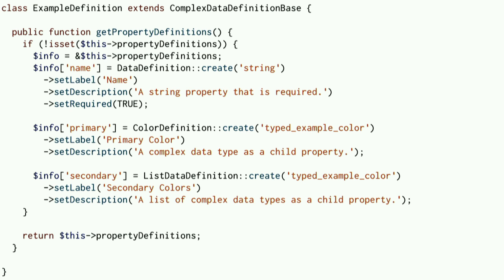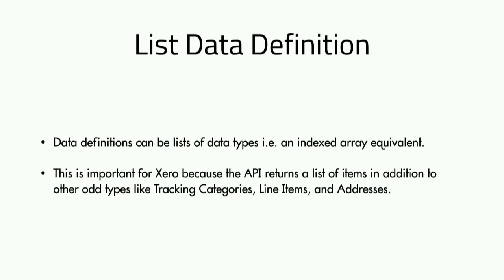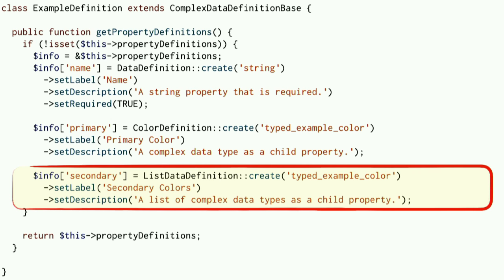In another example, describing a more complex type: the data definition uses the previous color definition and sets it to the primary color — describing a set of colors with primary and secondary colors on the color wheel. List data definition allows you to describe a property that is an index array. We use list data definition as the class, but the actual data type class will be the item class of that data type.